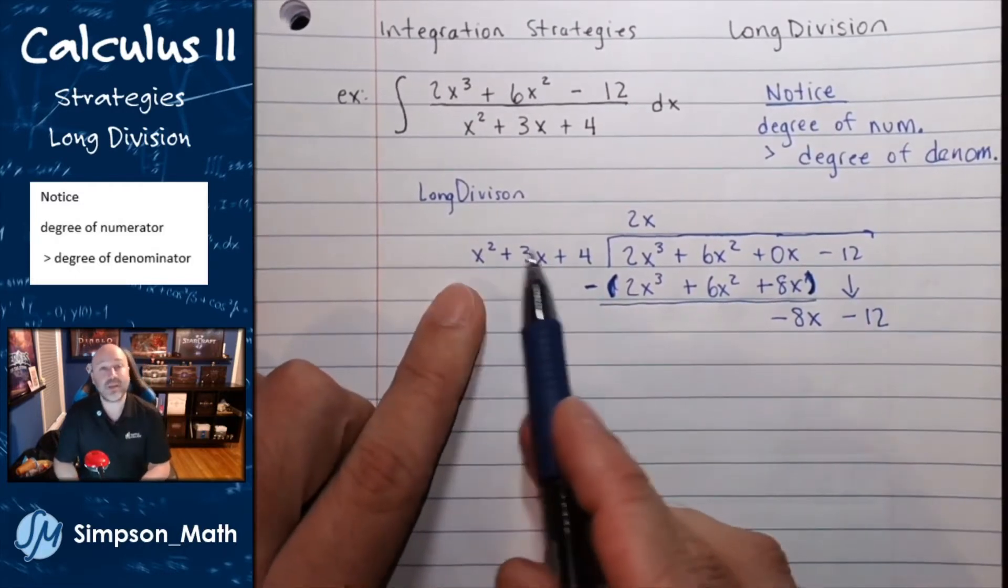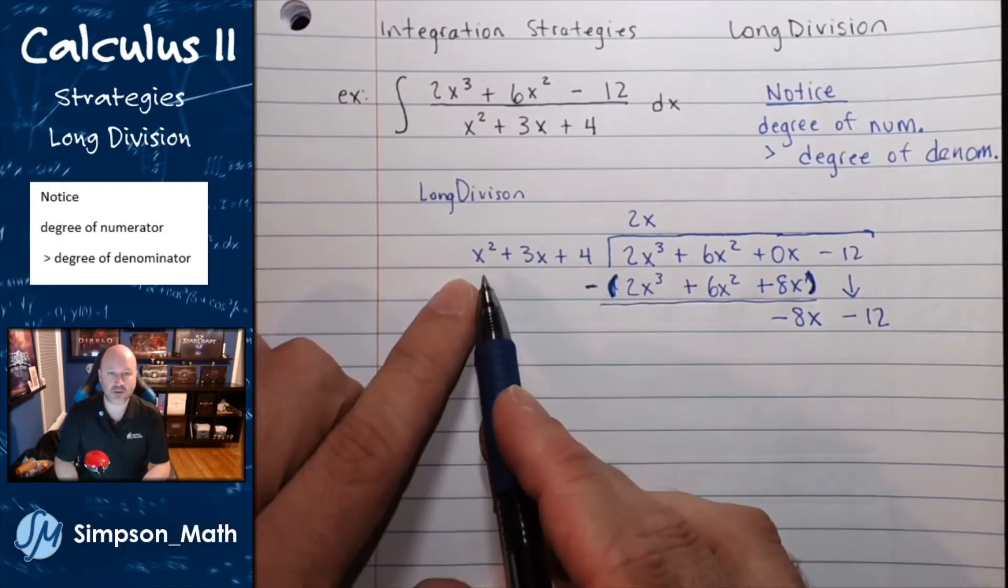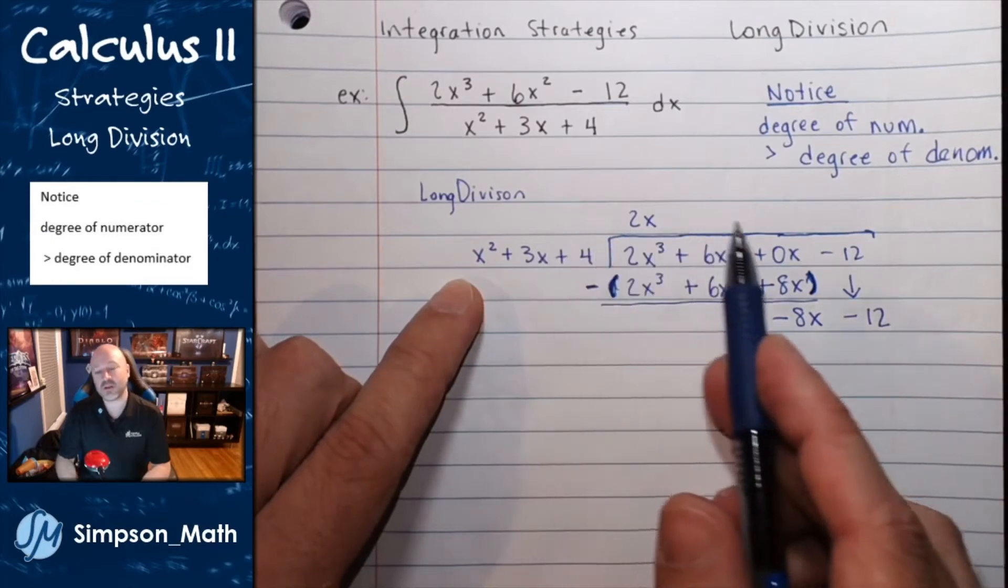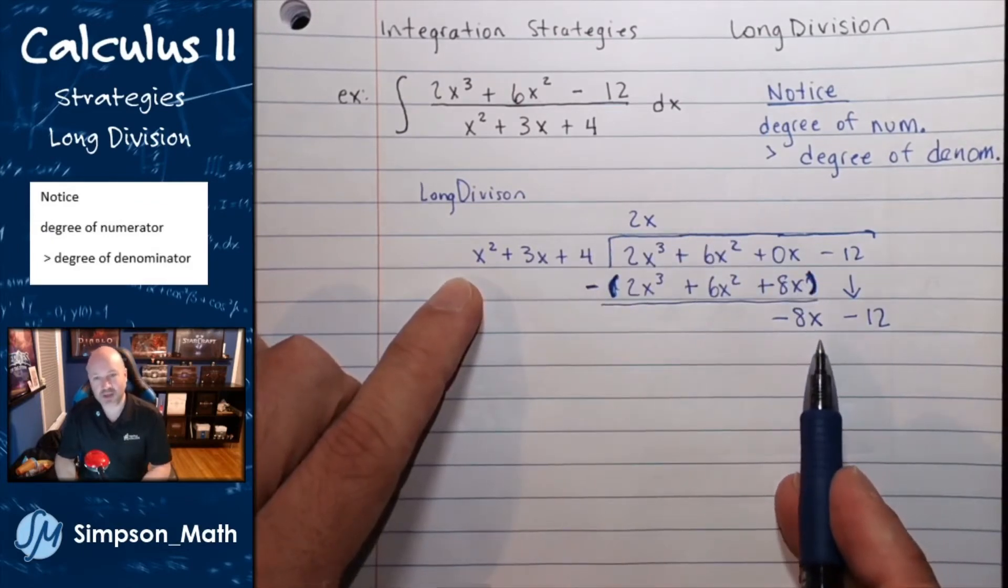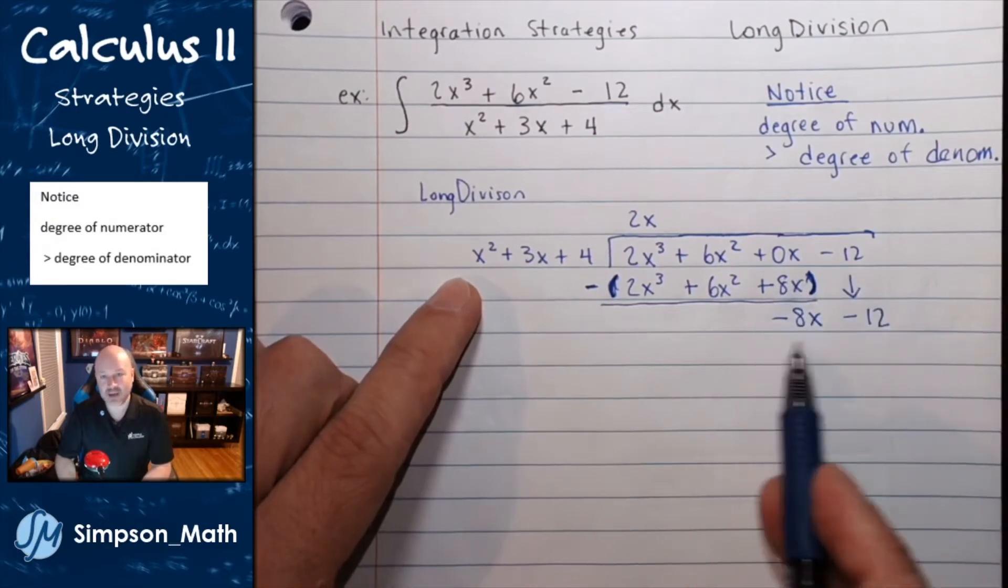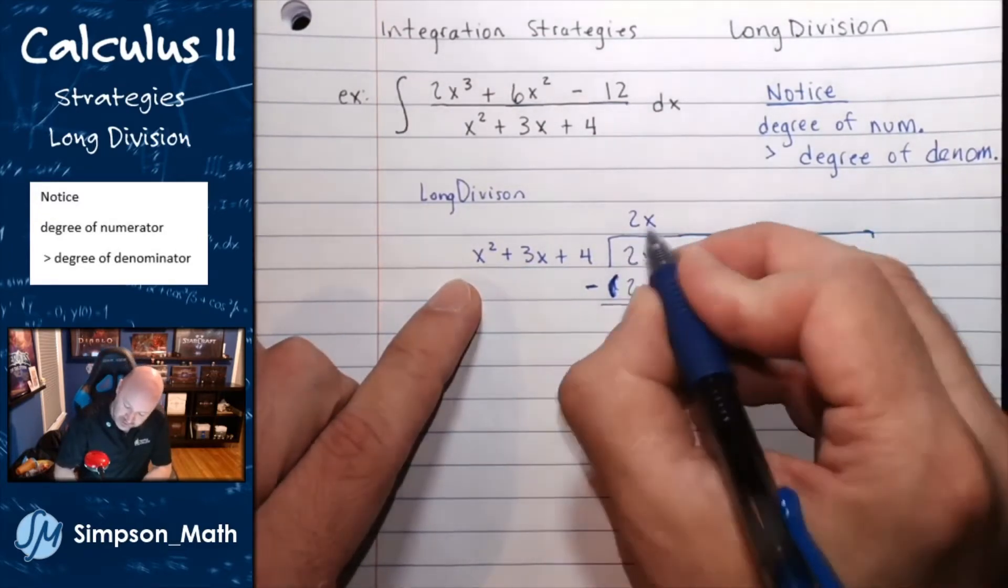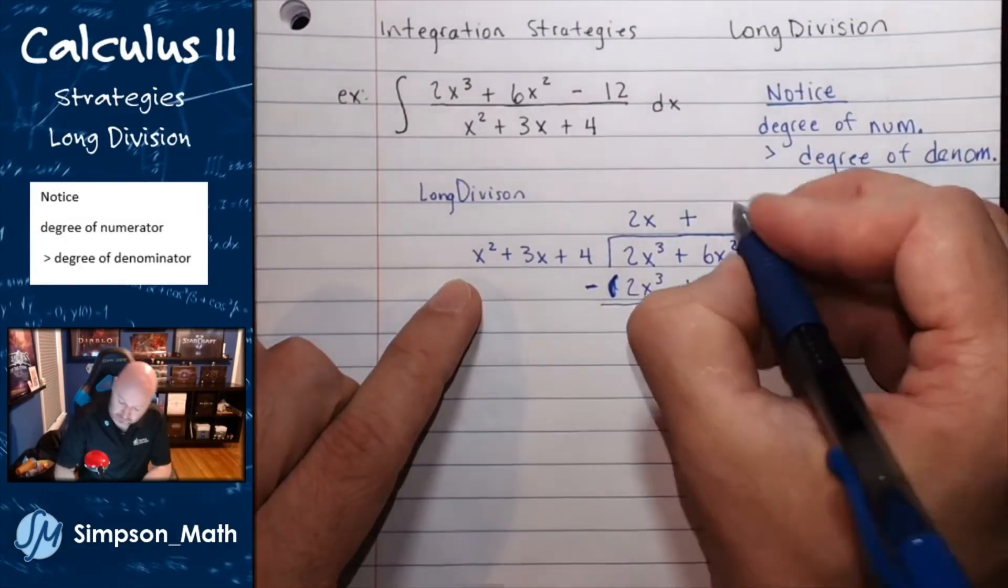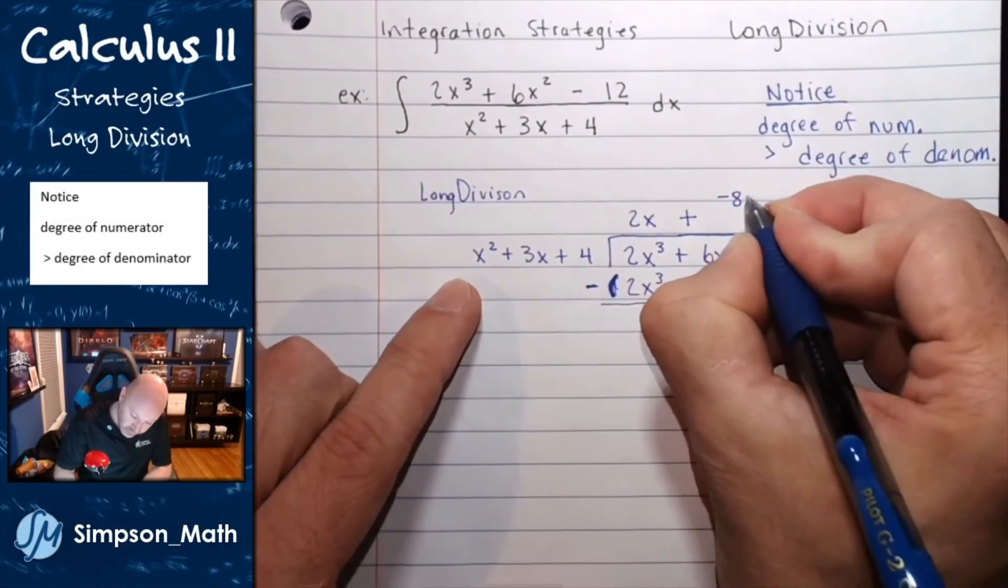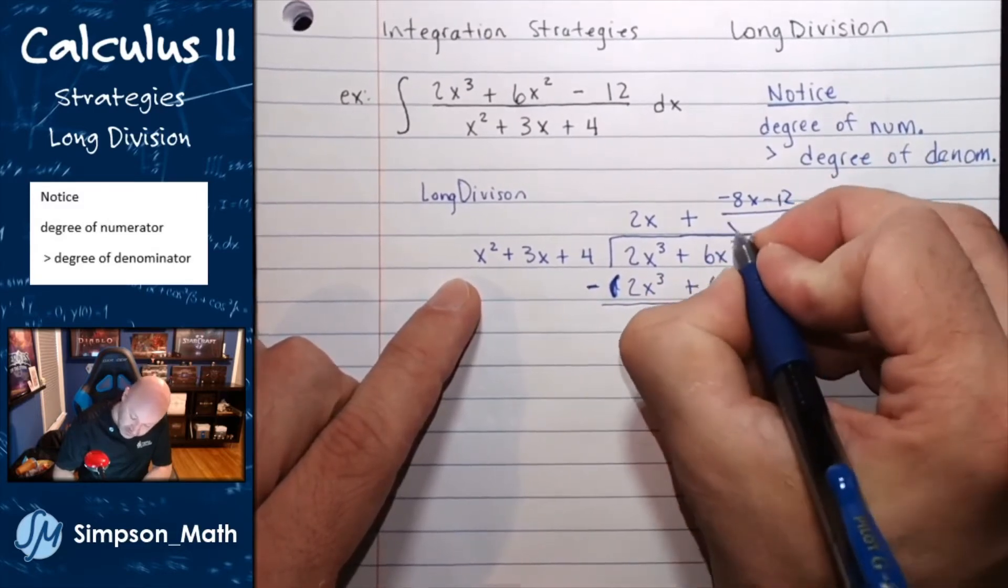We just repeat this process until it no longer fits. For example, x squared will not give me an x to the first power. So, what I have remaining down here is my remainder. My quotient, or my answer here, is 2x plus my remainder.